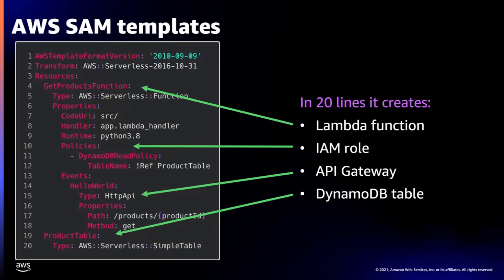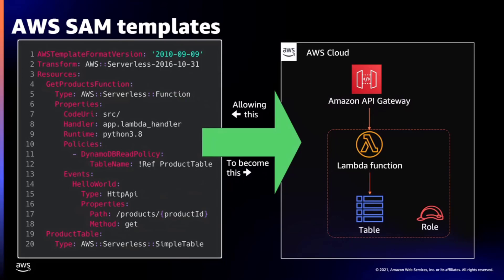Here's what an example SAM template looks like — written in YAML. You can see a few resources being deployed: a Lambda function, a DynamoDB table, and an API. You add the corresponding IAM role that lets the Lambda function talk to DynamoDB, and SAM simplifies policy options — you can change to a write policy or whatever you need. You're also creating an API from API Gateway as the event source. With these roughly 20 lines of code, the template on the left becomes the full architecture on the right, including automatic creation of the permission for API Gateway to invoke the function.